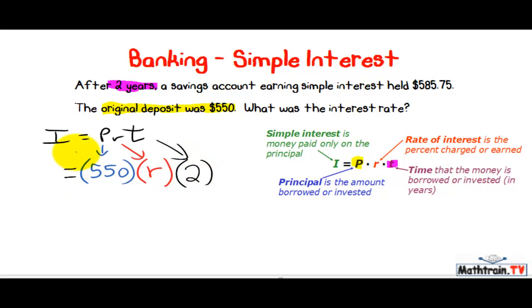And it equals I. I is the simple interest. How much simple interest was there? Well, many people will put $585.75 in for I, and that will be incorrect. Do you know why?